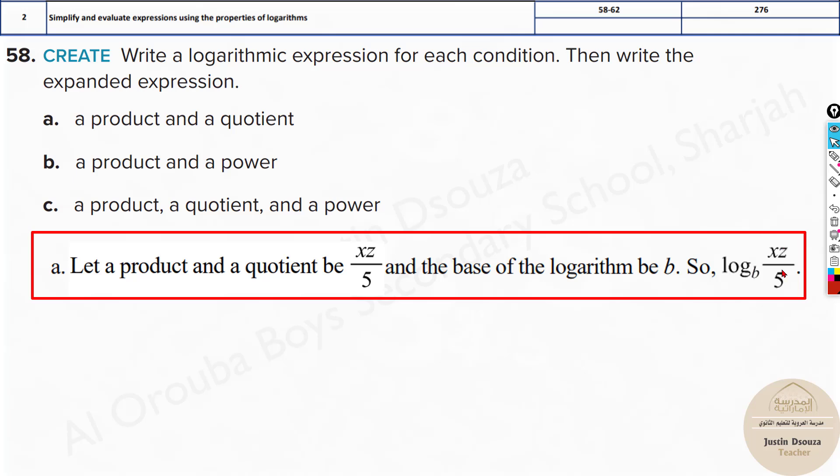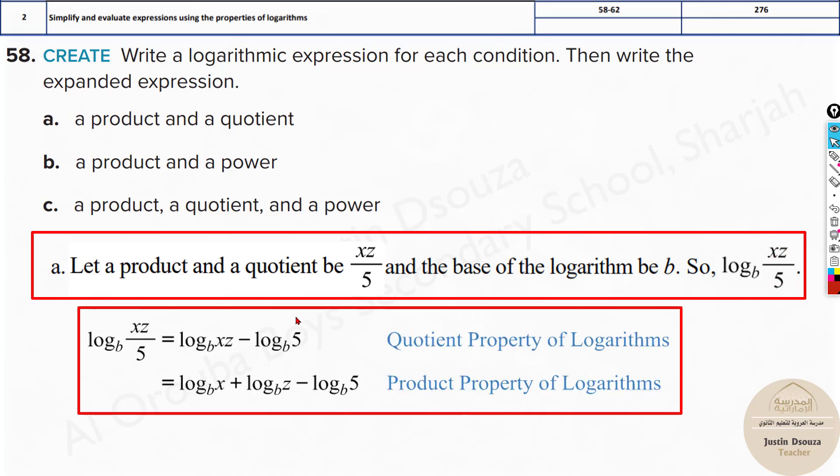The first thing will be the division quotient rule. Log base b of xz minus the divided part. When it's division, it becomes minus. And when you have two terms multiplied, you can split it out by multiplying the log base b to both terms and adding them up. Log base b x plus log base b z. This is the expansion, that's it. You can't expand further.